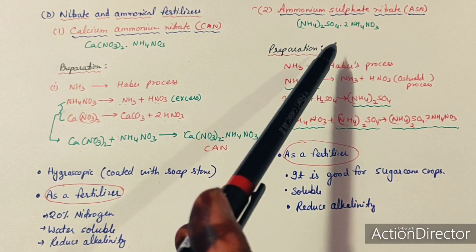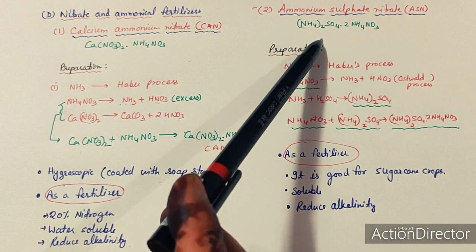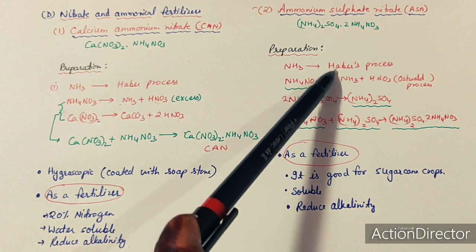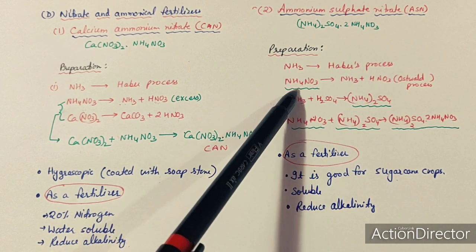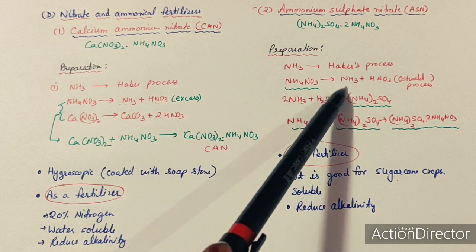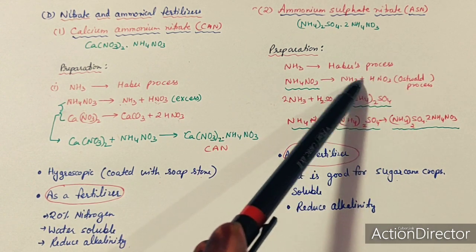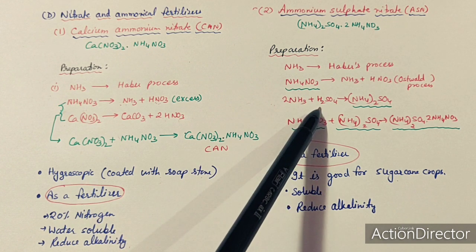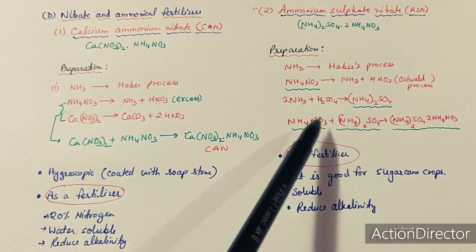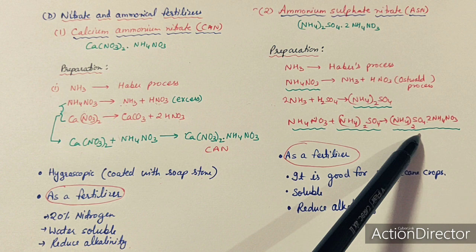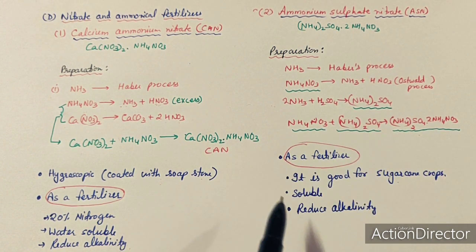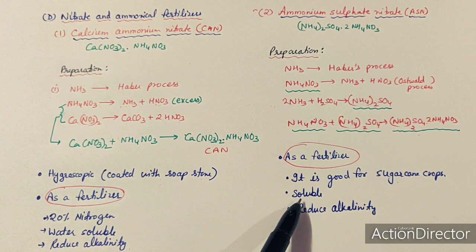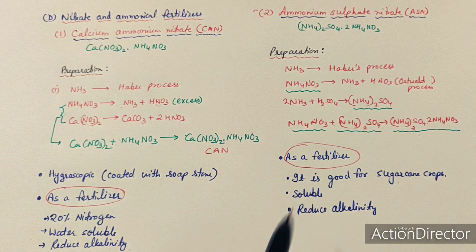Another mixed nitrogen fertilizer is ammonium sulfate nitrate (ASN) — a double salt of ammonium sulfate and ammonium nitrate. To prepare ASN, ammonia reacts with H₂SO₄ and HNO₃ to form both salts; when combined, the product is ammonium sulfate nitrate (ASN). As a fertilizer, ASN is a good fertilizer for sugar cane, is soluble in water, and reduces soil alkalinity.